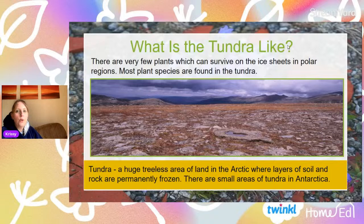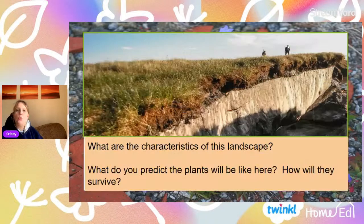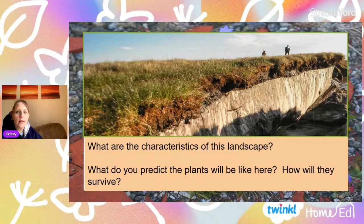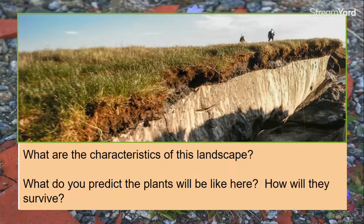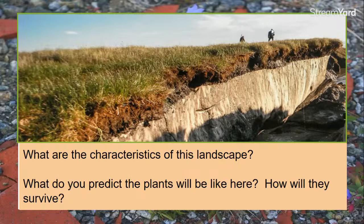However, those layers of soil and rocks are quite often permanently frozen. The centre of the Arctic, where those Arctic ice sheets are, and Antarctica in the centre — that's why it's known as a desert because nothing can grow there. But generally it's tundra. So this is what I want you to look at. I want you to look at this landscape — I'm going to turn my camera so you can see. What do you think the characteristics are? Put your physical geography hat on. What do you predict the plants will be like here, and how do you think they're surviving?